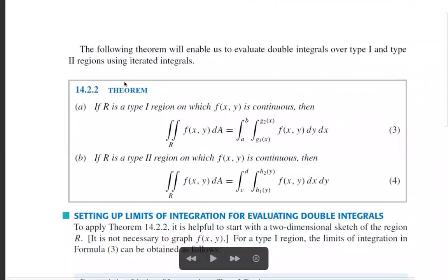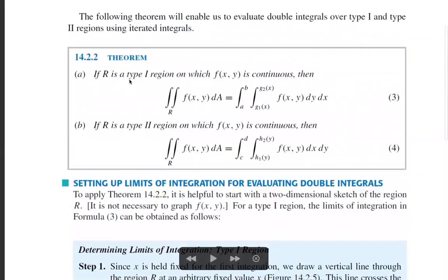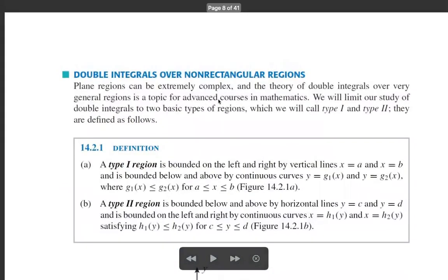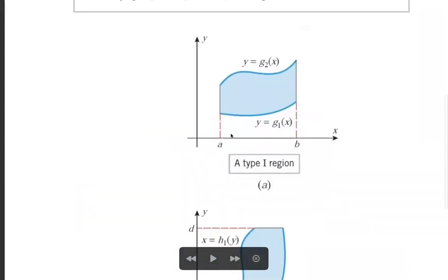If R is a Type 1 region on which f(x,y) is continuous, then the double integral over R of f(x,y) dA equals the integral from x = a to b of the integral from y = g1(x) to g2(x) of f(x,y) dy dx.